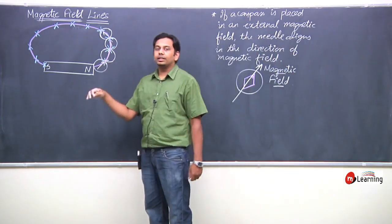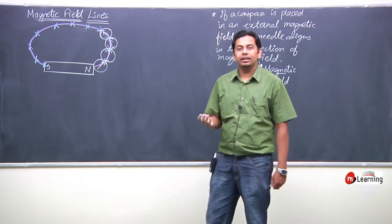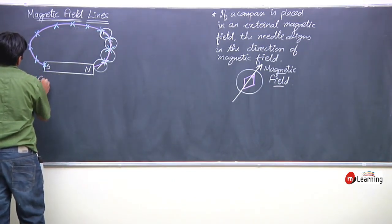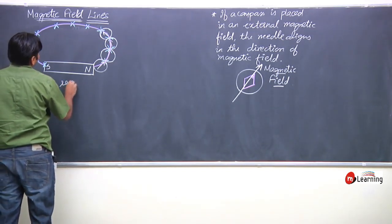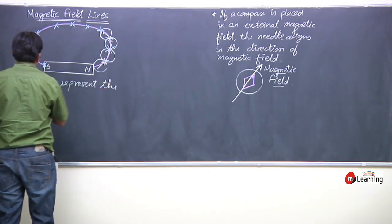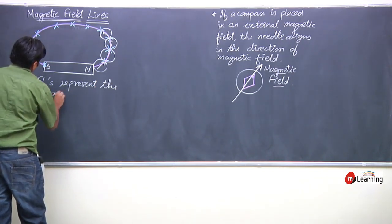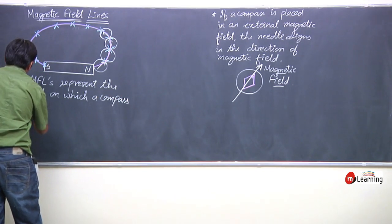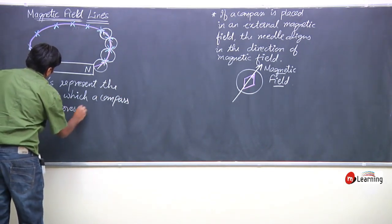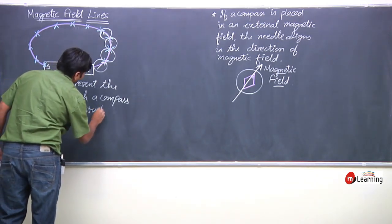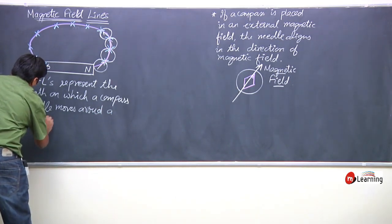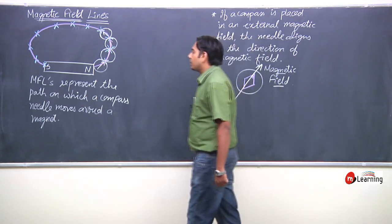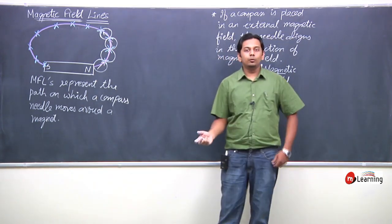At different points, the direction of the magnetic field is indicated by the magnetic field lines. The magnetic field lines represent the path on which a compass needle moves around a magnet.